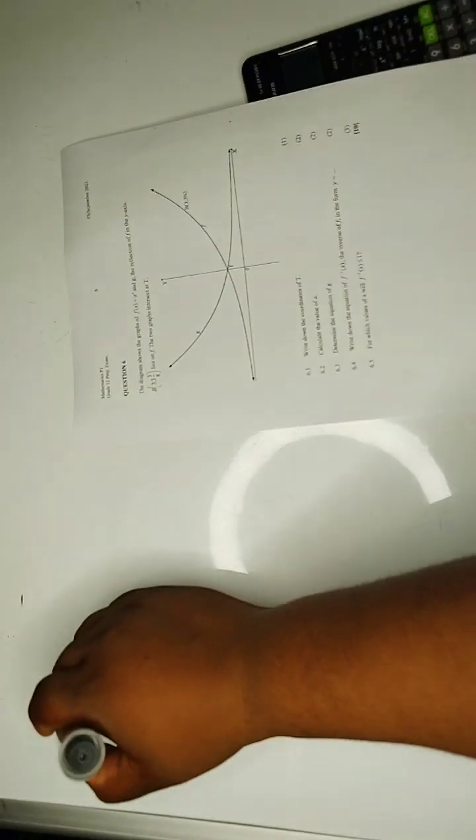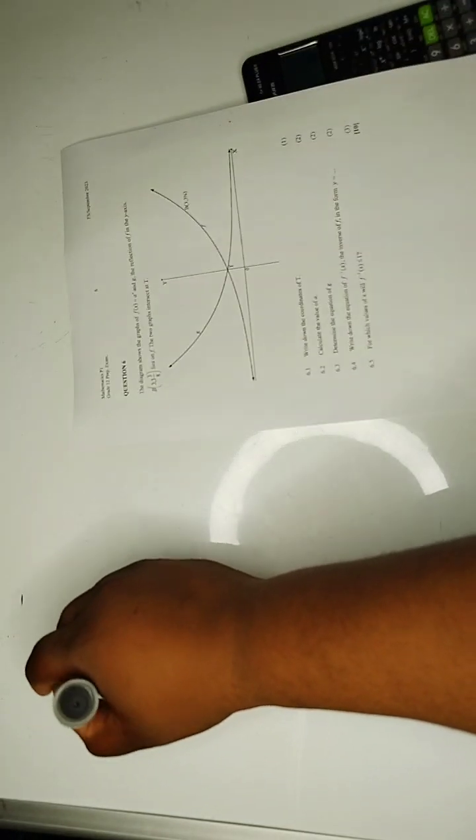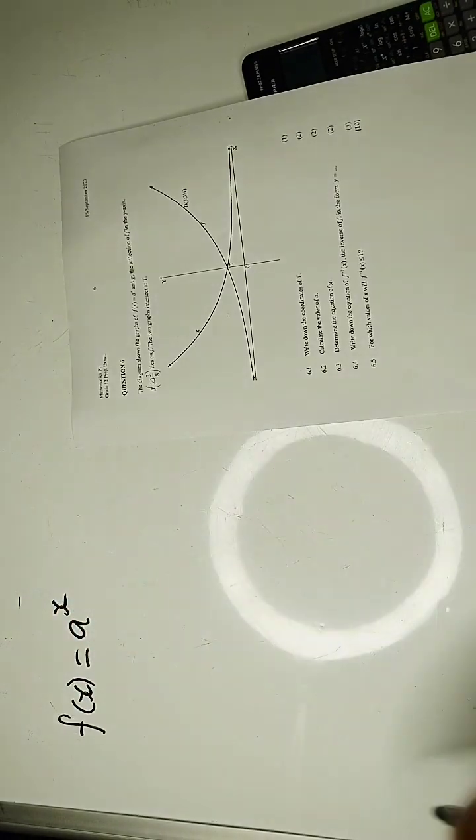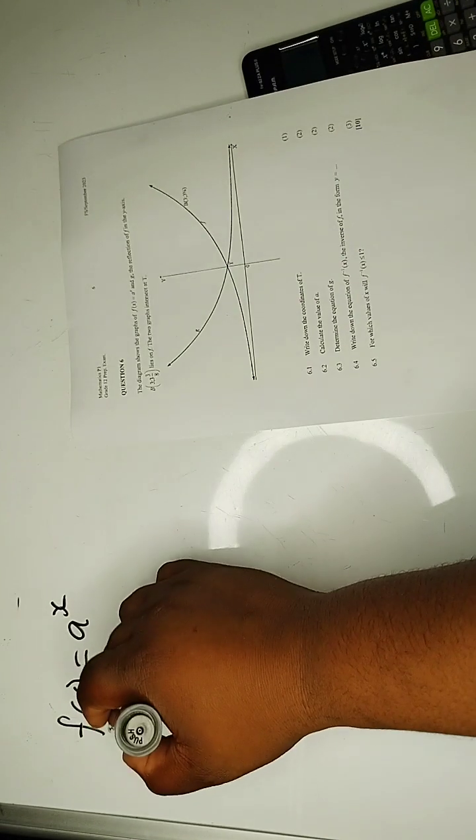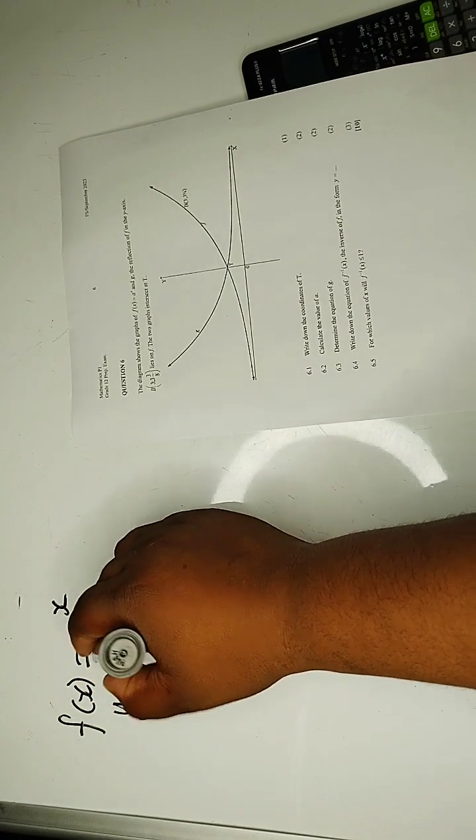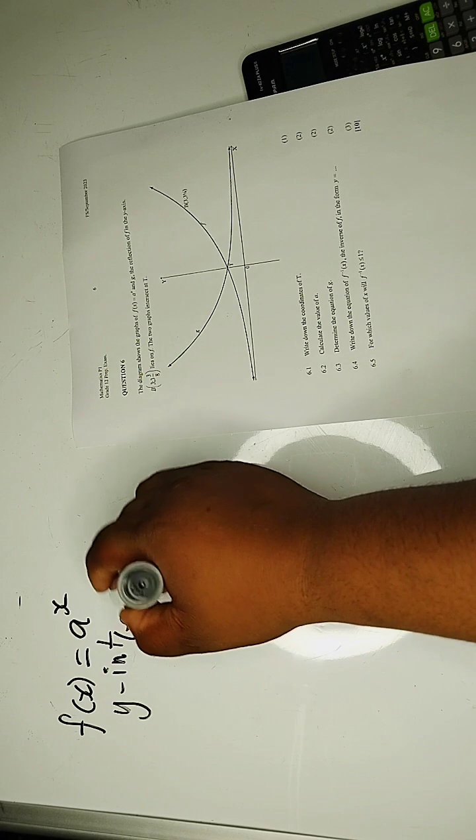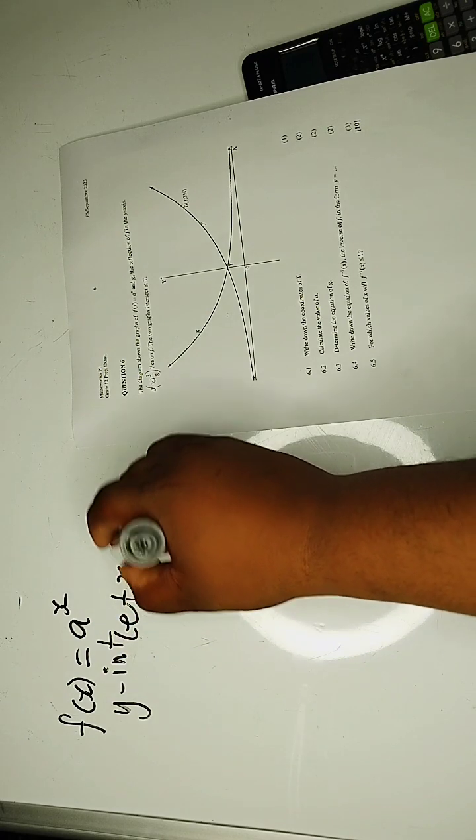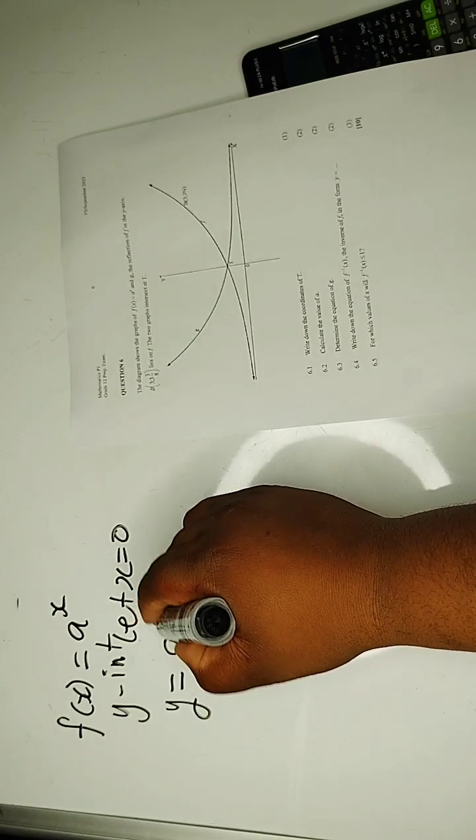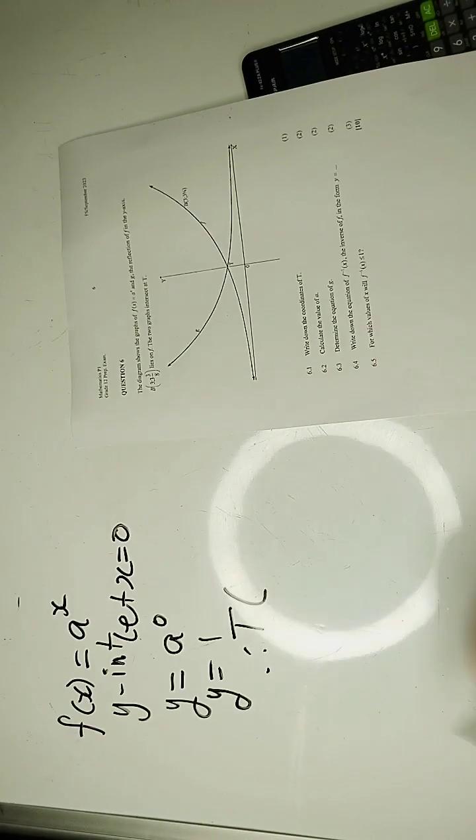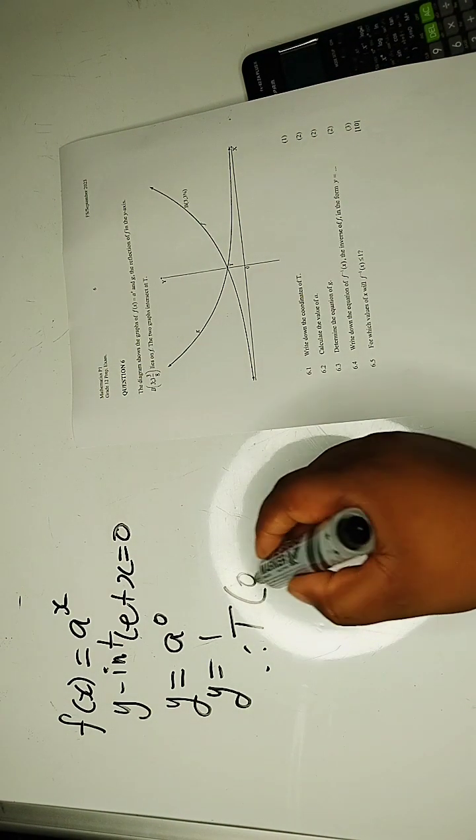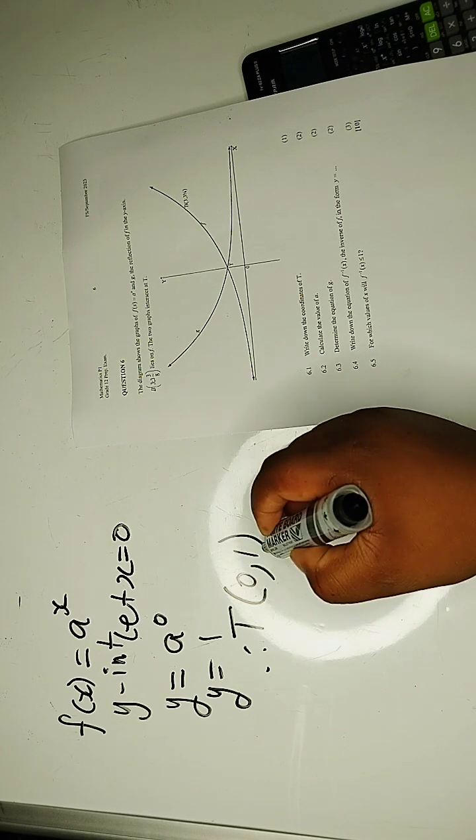I would have to say F at X is equals to A exponent X. Hence, this is a y-intercept, where we let X equals to 0. Hence, we know that Y is equals to A exponent 0, Y is equals to 1. Therefore, the coordinate of T is given by 0 is to 1.